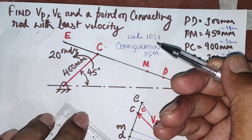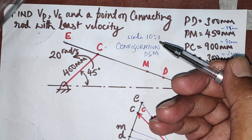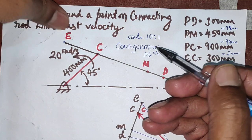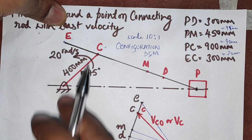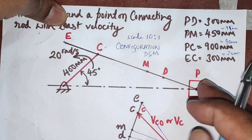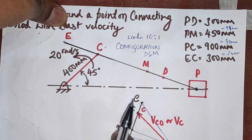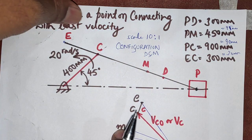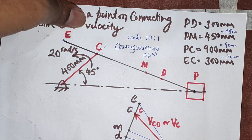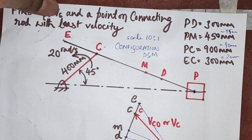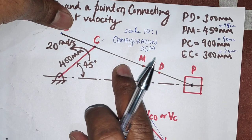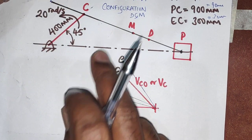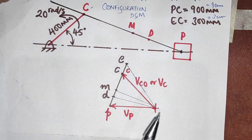Around 15 to 20 percent of the marks is reserved for drawing a configuration diagram. It is a necessity to proceed with the problem, which is why marks are allotted for it. Without a configuration diagram, you cannot draw the velocity diagram or the acceleration diagram.